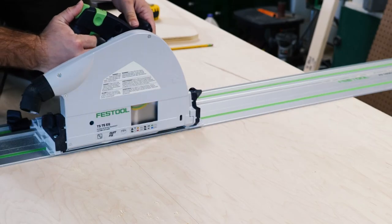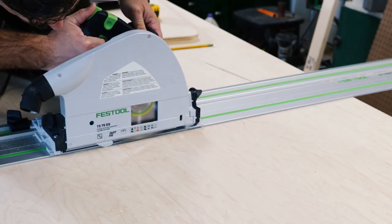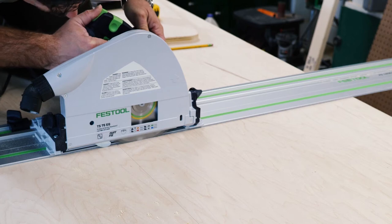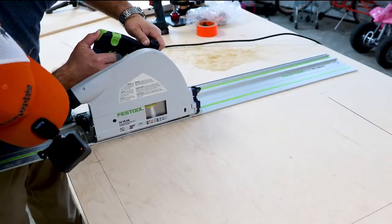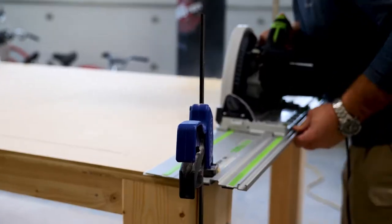Oh yeah, table saw? Well, how about a plunge cut? Can you do a plunge cut? No, you can't. When I made my work bench, I used this track saw a lot to cut out for my downdraft sanding table and my router table. And it comes in really handy when you need it.